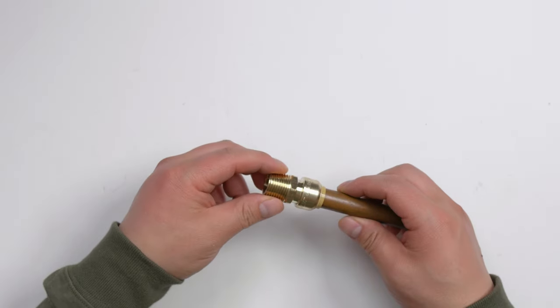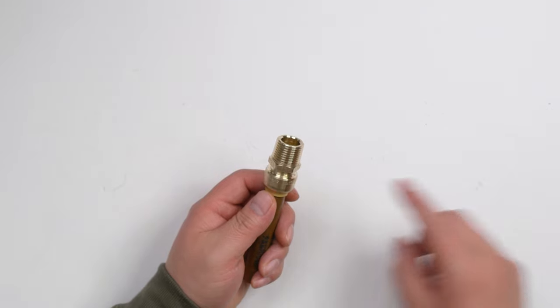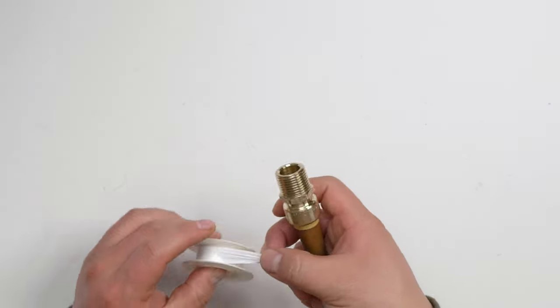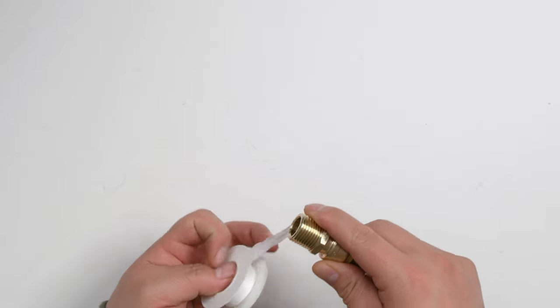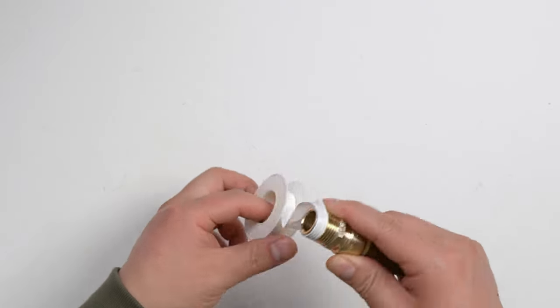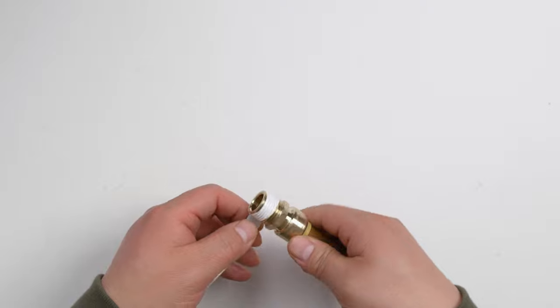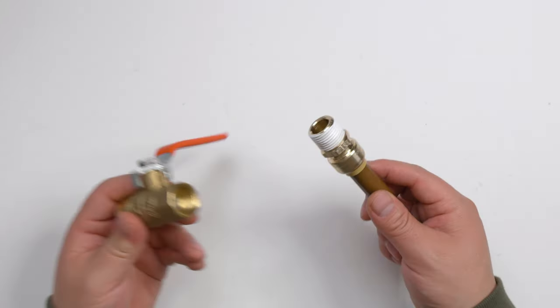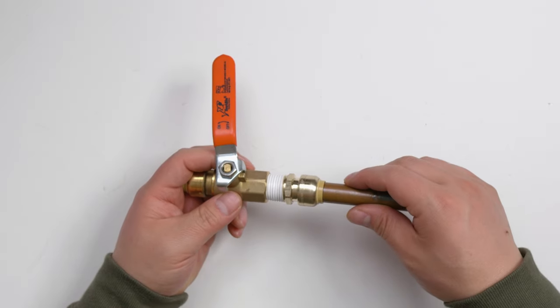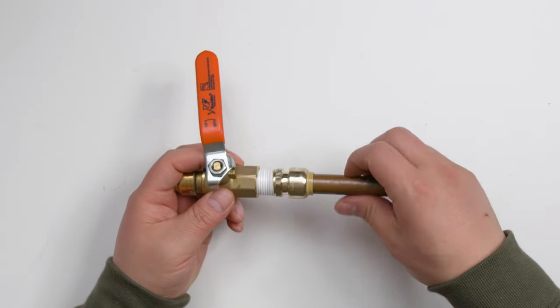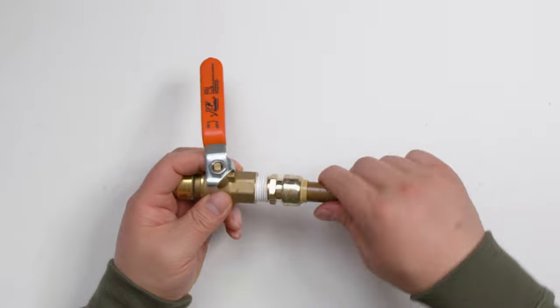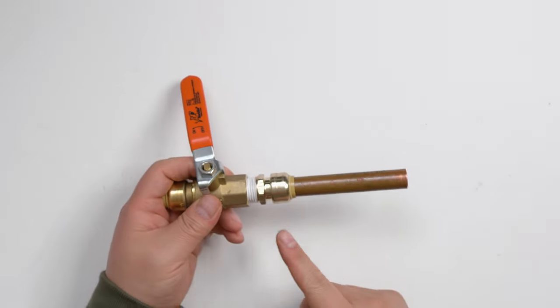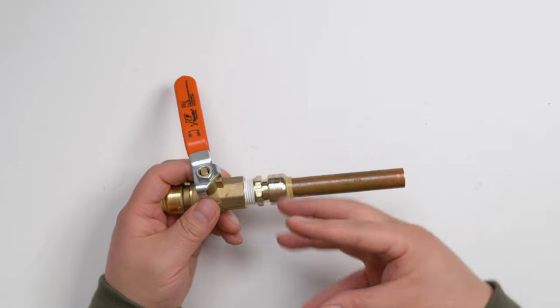Now let's do another part. For connecting this one, we need to use tape. For example, we connect it to the valve. It's very easy. Just thread it in. And then you need to use the wrench to make it tight.